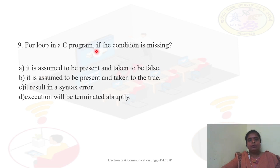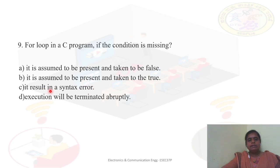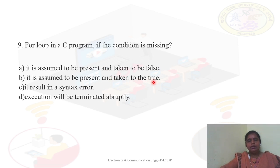For a for loop in C, if the condition is missing, what happens? In any loop, if the condition is missing, the compiler will assume it is present and take it as a true condition. So the answer is B — it is assumed to be present and taken as true.